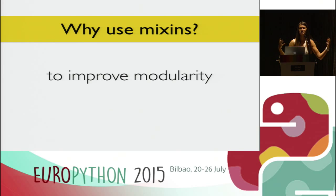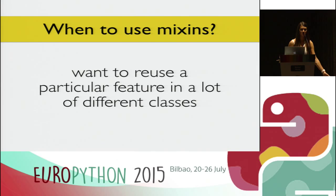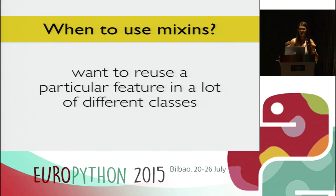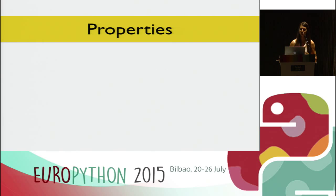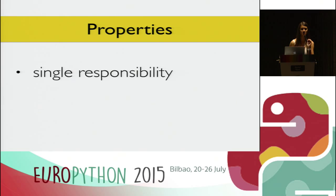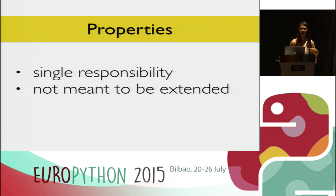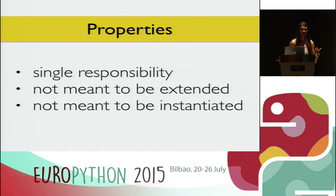Mix-ins offer modularity, and that's the main reason we want to use them. When to use them? When we want to reuse a particular feature in a lot of different classes, especially when this feature doesn't belong in any of the existing classes. That's why mix-ins should be narrow in scope — in other words, have one single responsibility. They're not meant to be extended, and they're not meant to be instantiated.